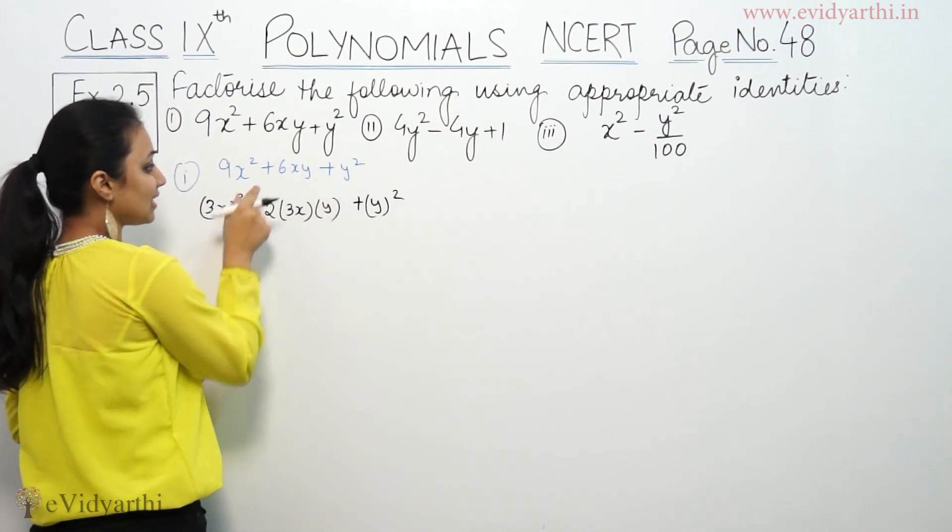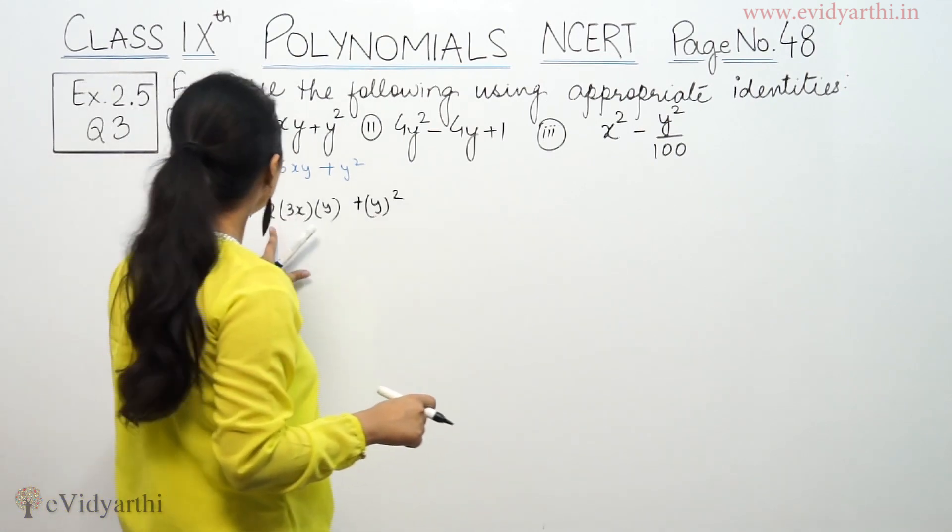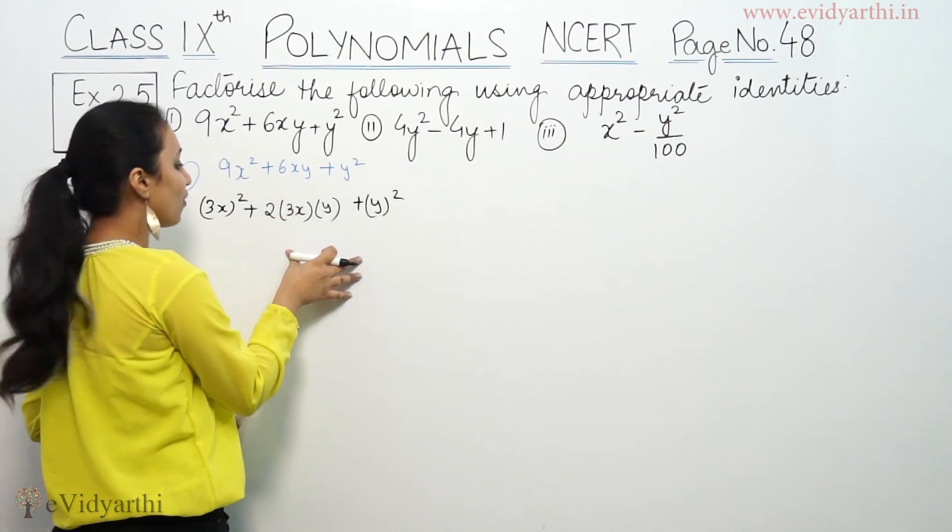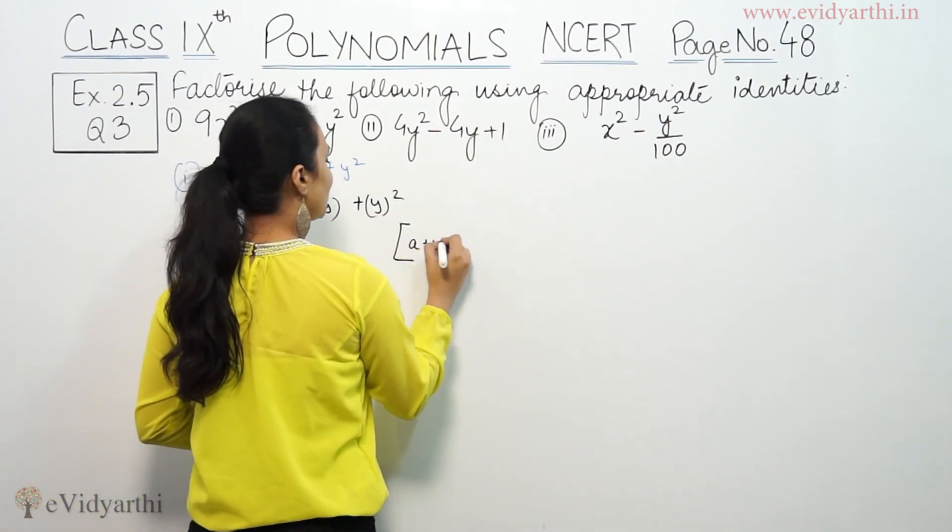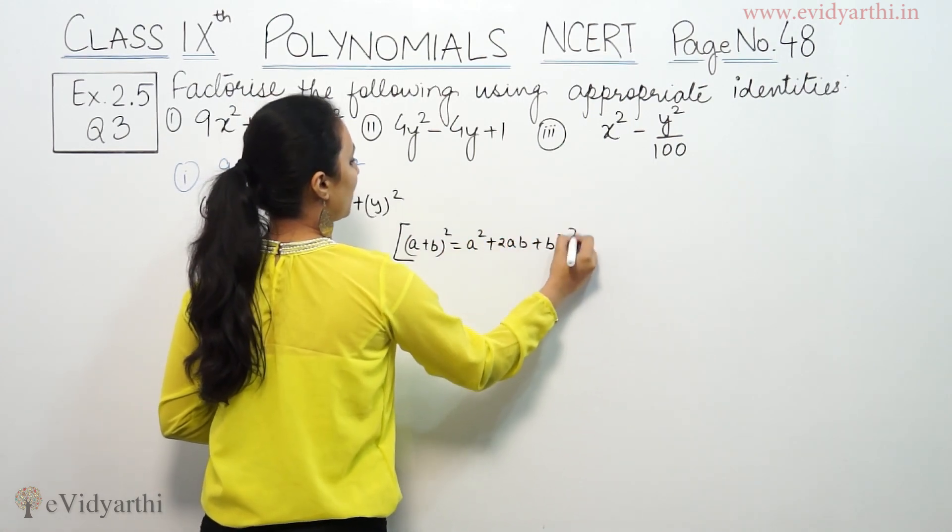Basically, we have to write this square in square. That means, how can we do this square? So, 2 into this 3x into y, which is 6xy. Then, we change the form. Our identity is a plus b, full square, a² plus 2ab plus b².